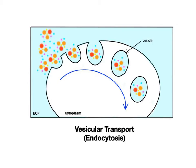One type of vesicular transport is endocytosis, in which large quantities of chemical substances are transported into a cell. The prefix endo means within or internal. When a large number of solutes within the ECF need to be transported into a cell, a region of the cell membrane will indent or invaginate, meaning it will sink down a little bit, and as the chemicals begin to accumulate,